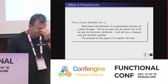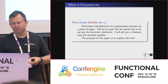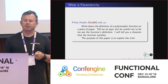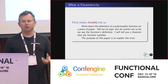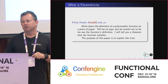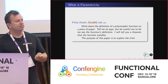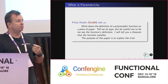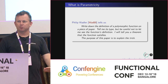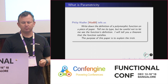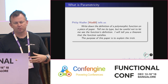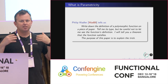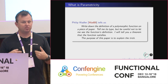So — parametricity. Why is it so important? What even is it? The paper is called Theorems for Free by Phil Wadler. Basically Phil says: write down the definition of a polymorphic function — and by polymorphic that's when we're using A's and B's — and tell me its type but don't let me see the definition. Just tell me the type, and I will tell you a theorem that function satisfies. My goal today is to give you an intuition to do this trick, to prepare you to read that paper and carry it forward in your work.